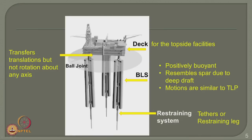On the other hand, if the buoyant leg structures are subjected to lateral load from hydrodynamic wave action, all these rotational motions would also be transferred to the deck. With a ball joint, however, if the buoyant leg structure rotates or pitches or rolls, this will not be transferred to the deck. Therefore, the deck is supposed to remain horizontal even under severe lateral forces. This enables smooth production and activity on the topside. This new conceived idea was conceptualized by White et al in 2005 and is now patented to IIT Madras.